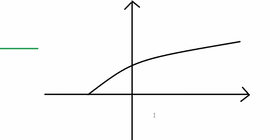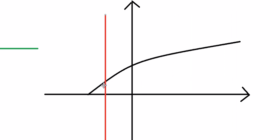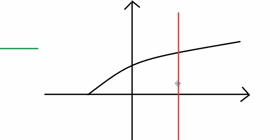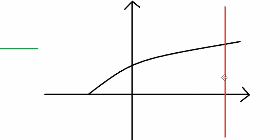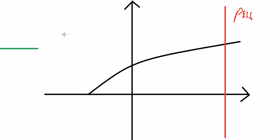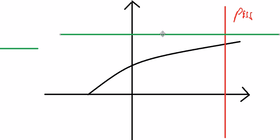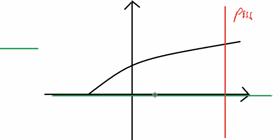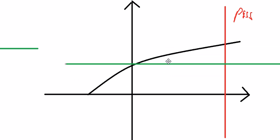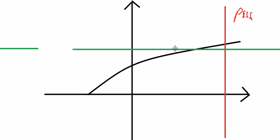Now let's go to this one. I draw the red line again, and you can see that we have only one intersection, so this is pass. Now I draw another line and move it up and down — we see that we have only one intersection, so this is pass.